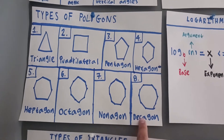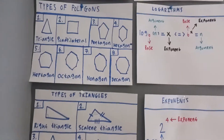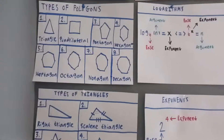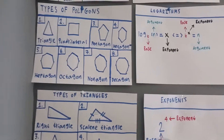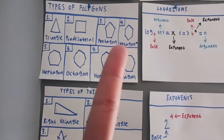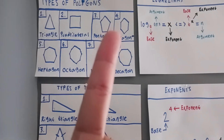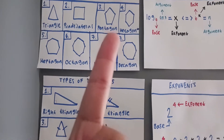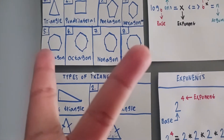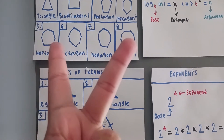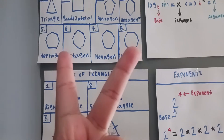Nonagon and decagon. And I remember some of the rest of them — the shape that has 11 sides is a hendecagon, and the shape that has 12 sides has...